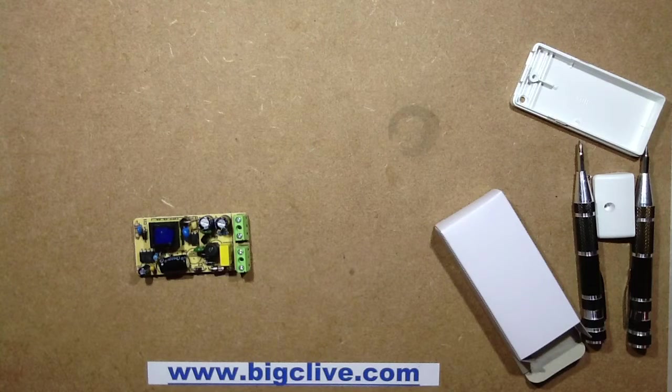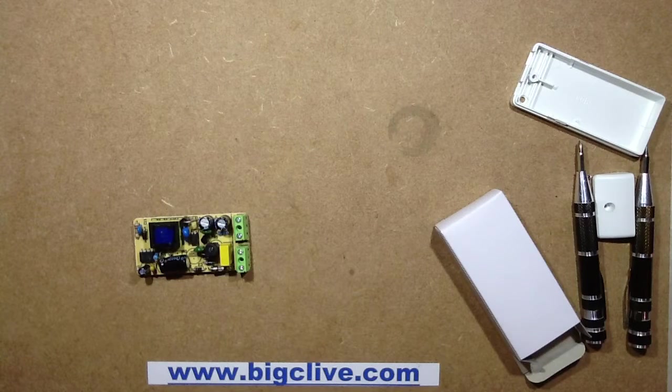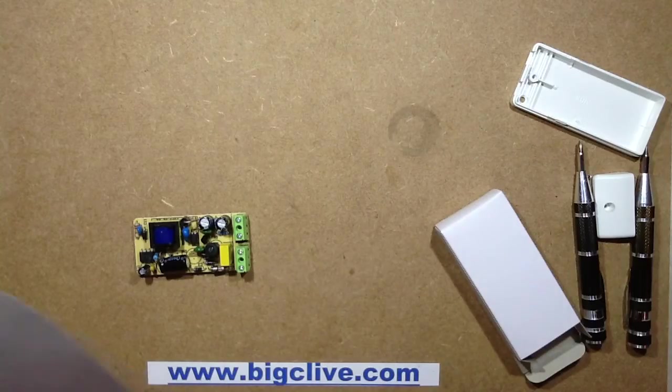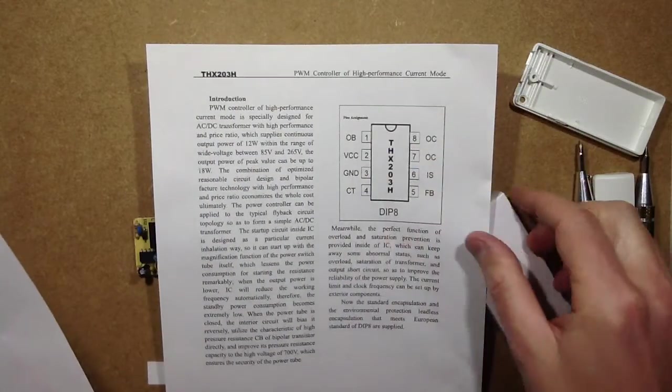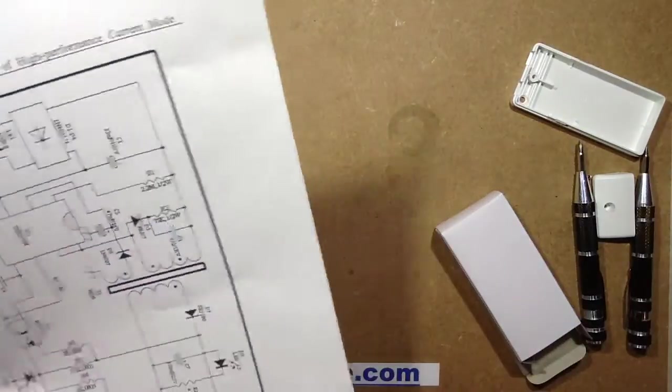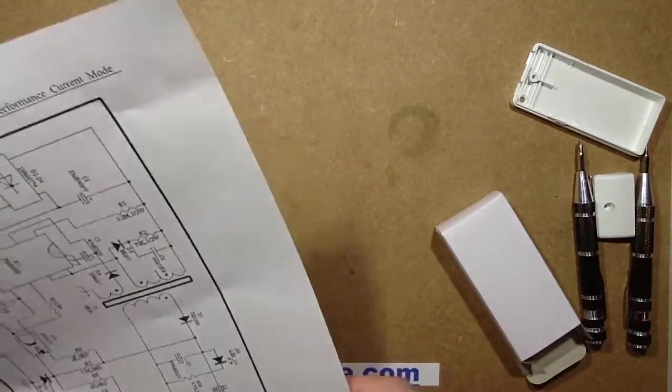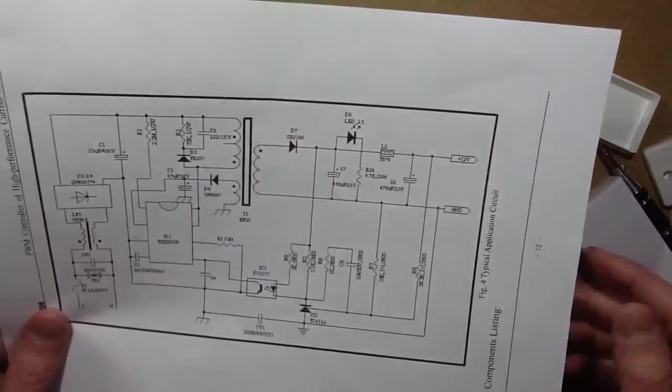Well there's a bit of a data sheet. Oh there's another bit as well. Yeah, it looks a bit like a rip-off of the Fairchild type chip. I mean obviously Fairchild don't have exclusive rights to this. This one does however have a schematic.